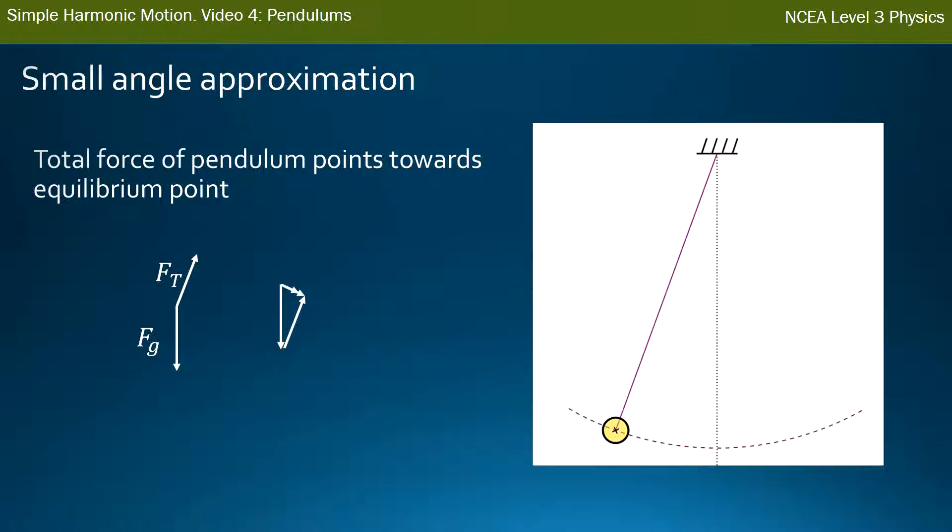In this case I draw my total forces with double arrows, and it points down that way. So if I put that total force onto my diagram on the right here, can you see the black arrows just added? They point back towards that equilibrium point. So this does obey our definition of Simple Harmonic Motion. The force is back towards the equilibrium point.